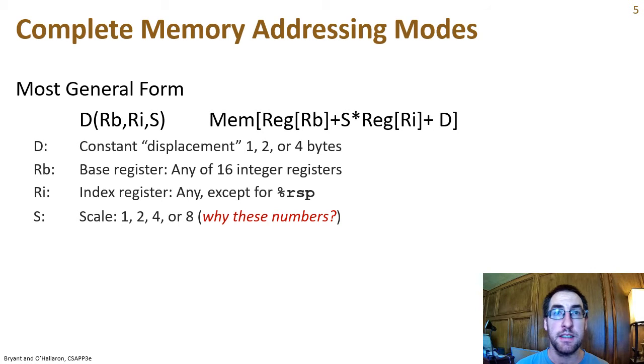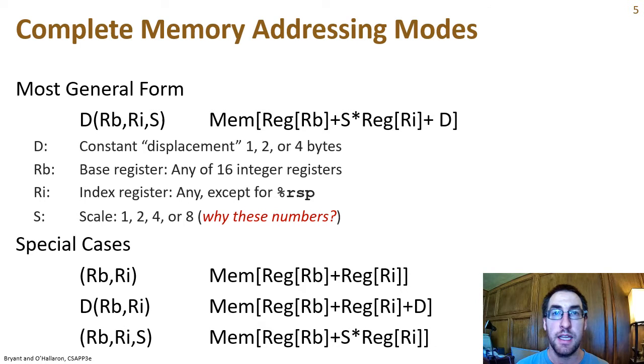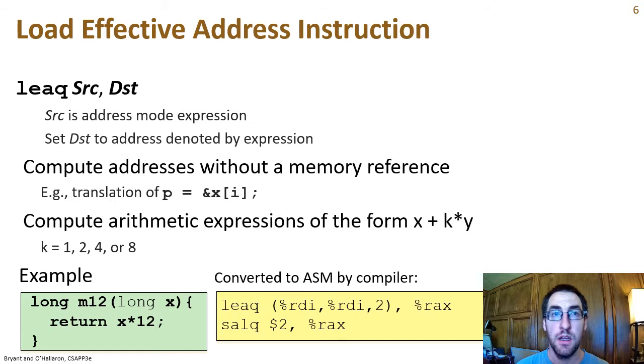Remember that x86 has a fairly involved process for generating an effective address that supports several possible addressing modes ranging from absolute addressing with just an immediate value to the scaled index plus displacement addressing. Although addressing modes are primarily used for memory operands, there is an instruction called load effective address with the mnemonic LEAQ that calculates a quad word effective address without making a memory access.